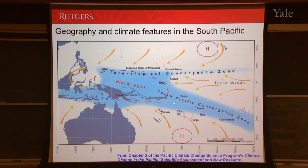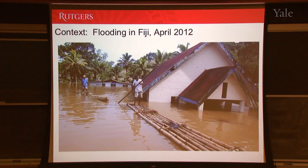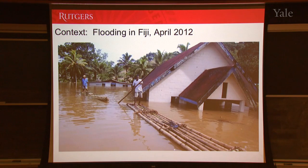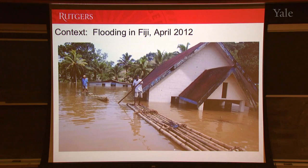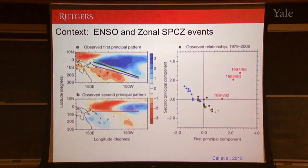This is a big ocean region, but lots of little island nations exist here. If you're living on those island nations, you might have to deal with things like flooding. This was a particularly disastrous time in Fiji in 2012, both in January and April — the island experienced pretty significant flooding. The SPCZ, as one of the main drivers of climate in this region, certainly from the context of extreme events, is something we want to know a bit more about.